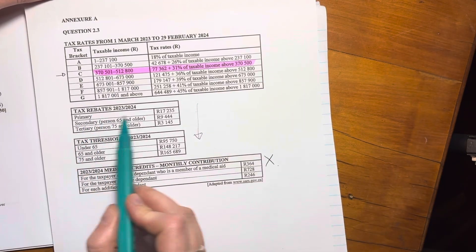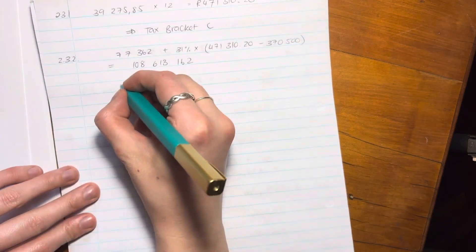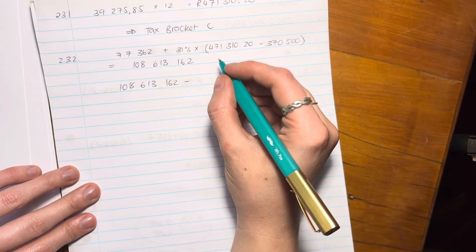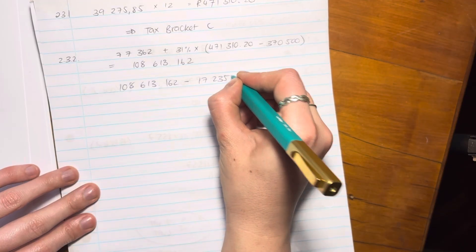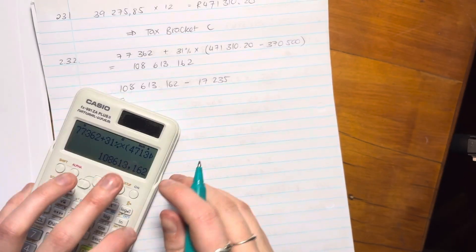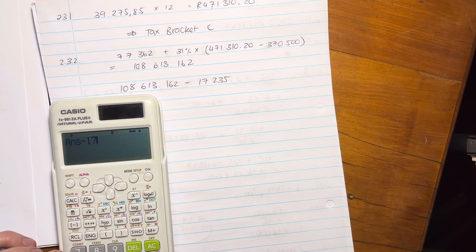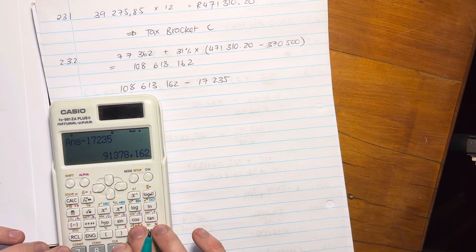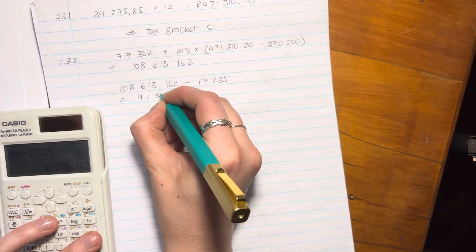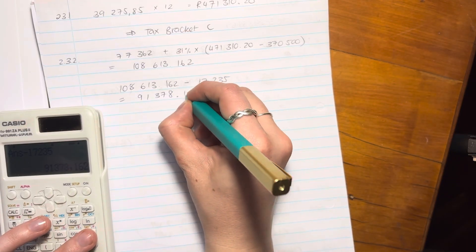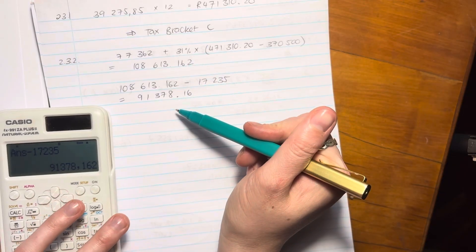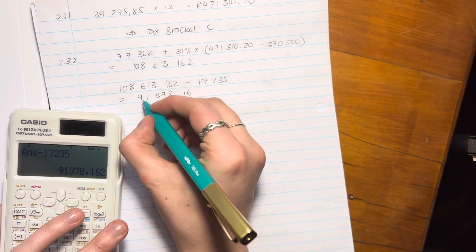So let's take off her primary. So we say 108,613.162 and we take off 17,235. So we take that off. So we're going to say subtract 17,235. And then we have 91,378.16. So that amount there is going to be the amount that she's going to pay.